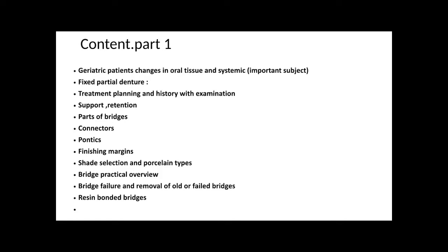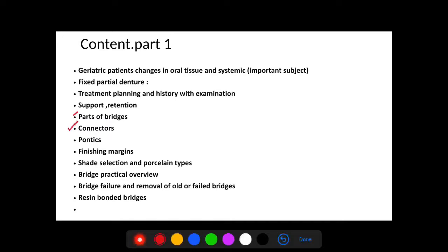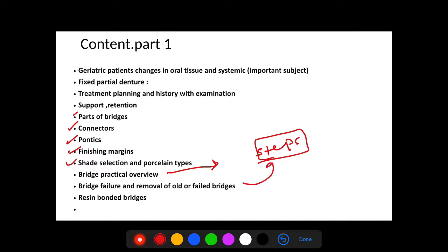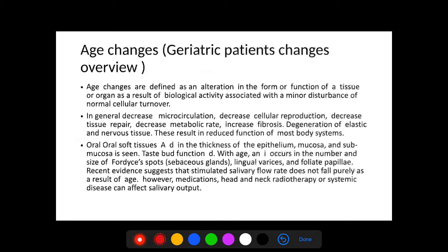Today we'll talk about prosthodontics. We will cover geriatric patient changes in oral tissue and systemic changes, fixed partial denture treatment planning, history and examination, support and retention and the difference between them, parts of the bridge, connectors, pontics, finishing margins, shade selection, practical bridge overview, failures, removal of the old bridge, and the resin bonded bridge.